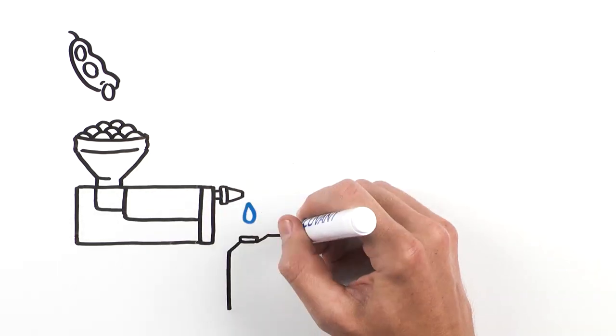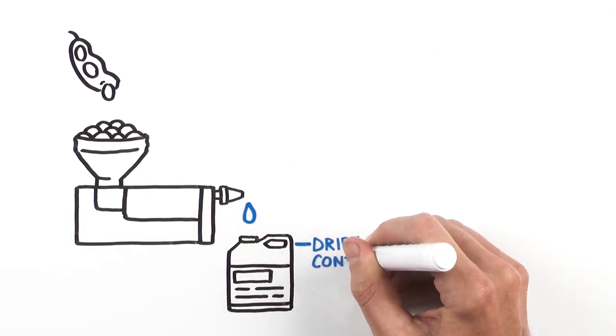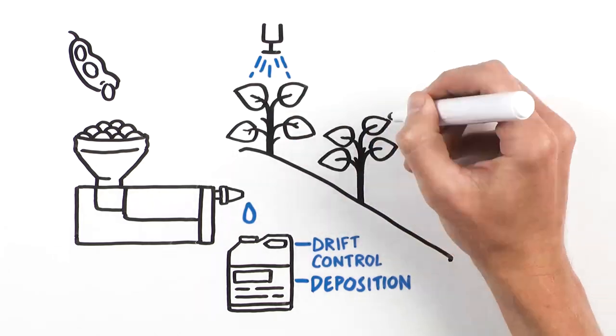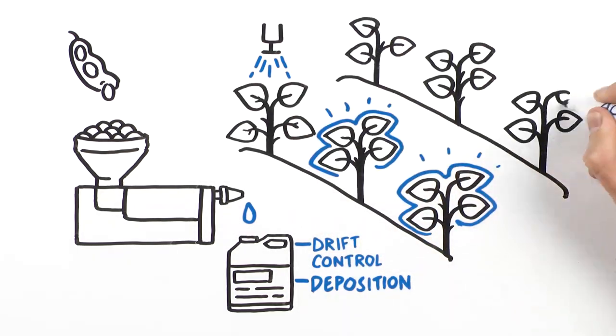Then CHS crushes those soybeans into refined oil to deliver an adjuvant with better drift control and deposition. That means crop protection products stay where they belong, on your fields.